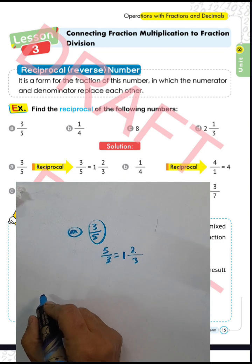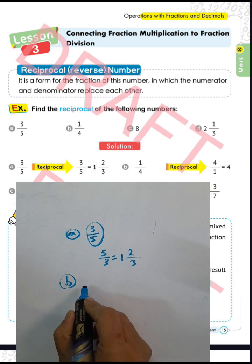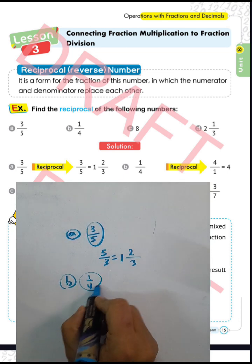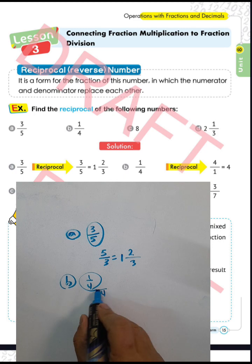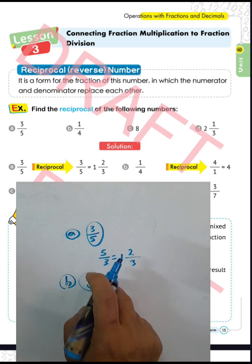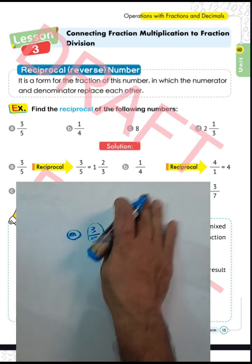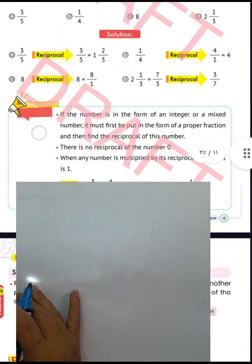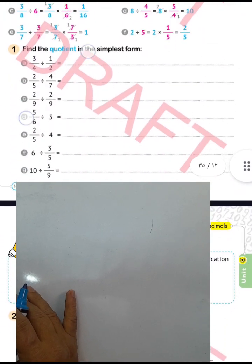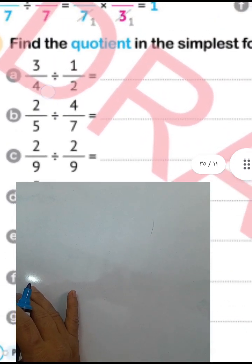The result will be 1 and 2 over 3. Next question: find the inverse of 1 over 4. You can find the inverse of this fraction by writing 4 over 1, so the result will be 4. The inverse of 4 will be 4 over 1, which equals 4. Now look at the questions here and find the answer in simplest form.